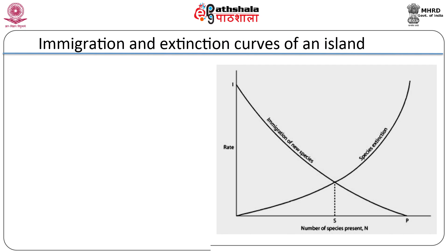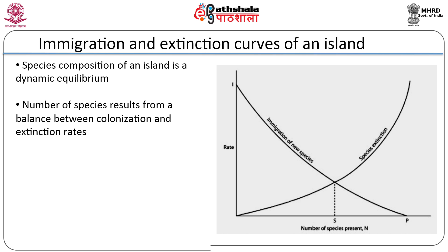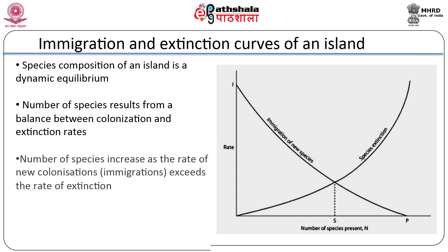Scientists have proposed that the species composition of an island is a dynamic equilibrium, with the number of species resulting from a balance between colonization and extinction. That is, the number of species on an island reflects a balance between the rate at which new species colonize it and the rate at which populations of established species become extinct. The number of species on an island is increased by new colonizations but decreased by extinctions.